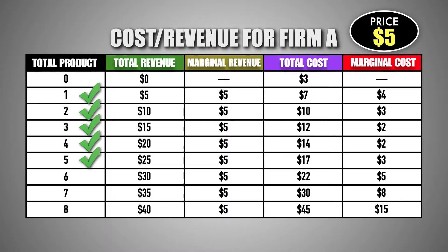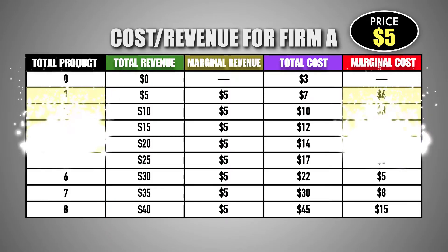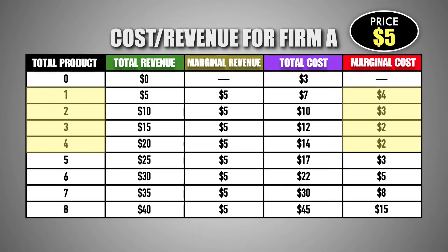However, when producing the sixth unit of good M, the marginal revenue gained by the firm is equal to the marginal cost of producing that unit. Take a closer look at marginal cost. Initially, the marginal cost of each unit of good M decreases, but then, as production continues, it begins to increase.